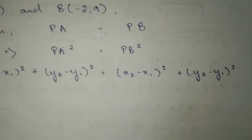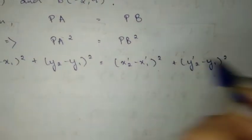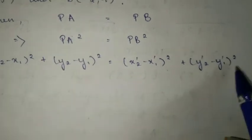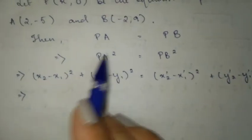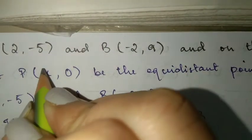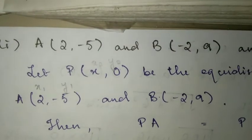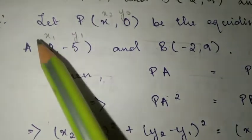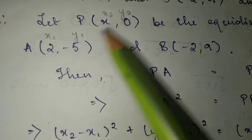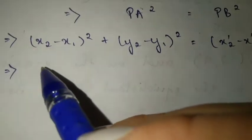But one thing you must remember here is that you cannot cancel it like that. Let's name the points: B will be x2, y2 and A will be x1, y1. Now, let's substitute the formula.